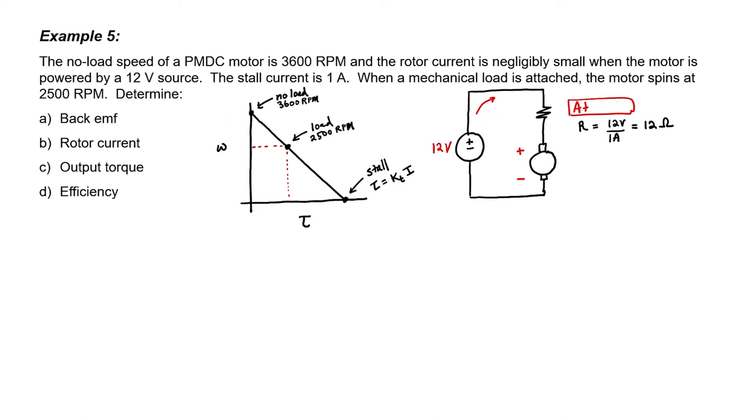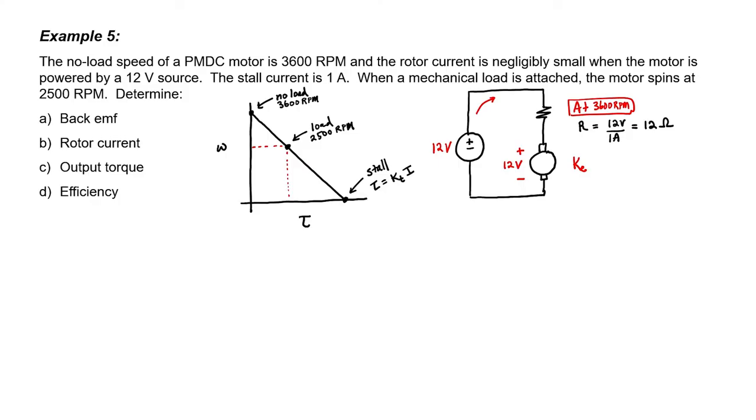Let's now look at the situation at 3600 rpms, the no load condition. Since the rotor current is negligibly small at the no load condition, I know that the entire 12 volts should show up across the mechanical portion of the motor. Basically, the motor spins faster and faster until the 12 volts shows up across the motor shaft. When you have 12 volts on either side of the coil, you end up with negligible current. This is the no load condition.